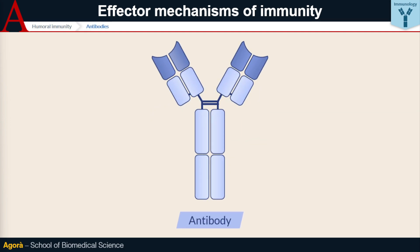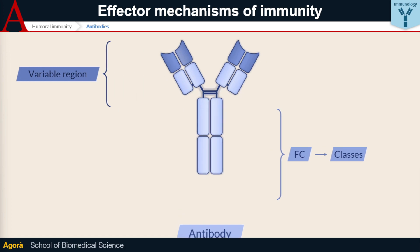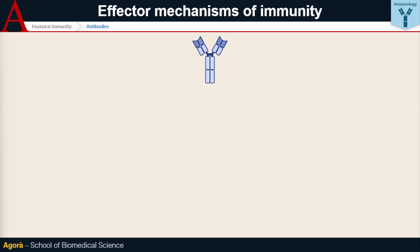While the specificity of antibodies for a given antigen depends on the variable region, the type of effector mechanism depends on the constant region — the Fc region. There are in fact five different types of Fc regions that determine the antibody class or isotype. Different Fc regions interact with different cell types and elicit different immune responses.